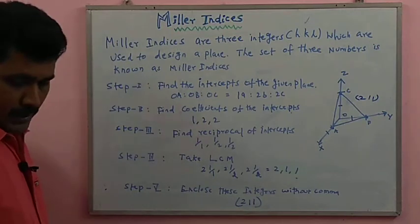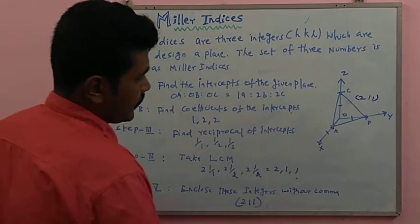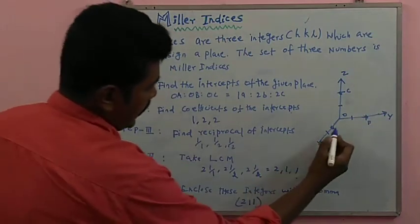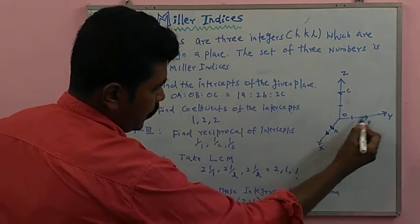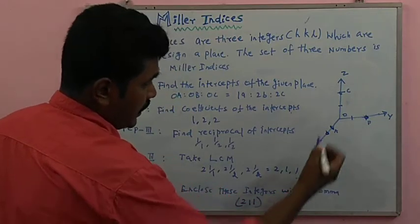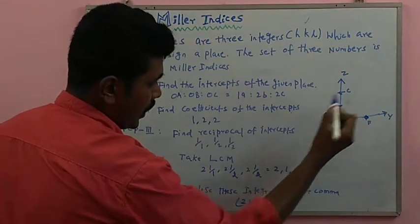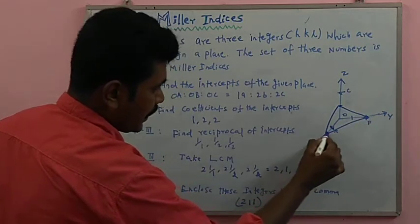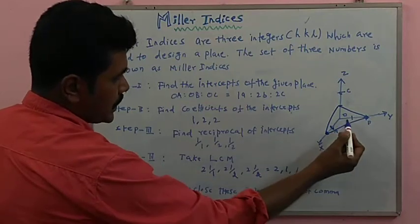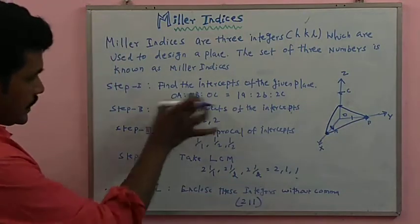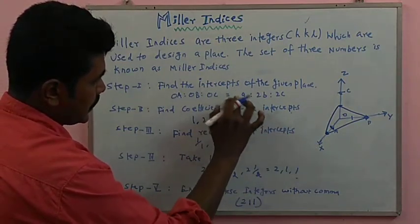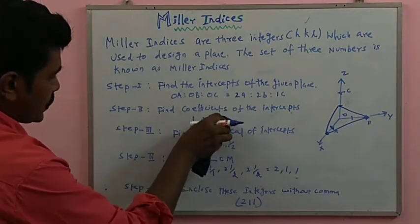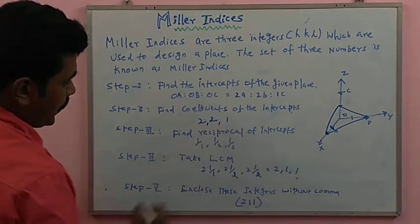For another example, consider the plane ACE where the x-axis intercept is two units, y-axis intercept is two units, and z-axis intercept is one unit. So OA is two units, OB is two units, and OC is one unit. The coefficient values are 2, 2, 1.